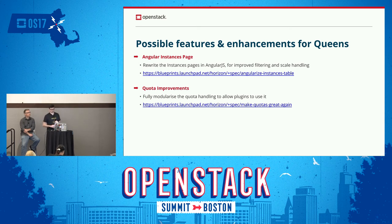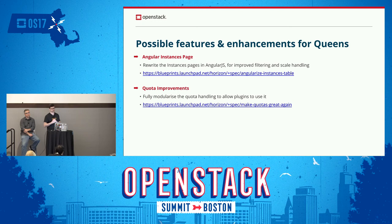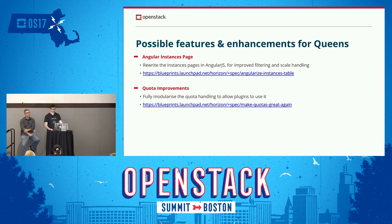The instances work is one of the key items. Instances becomes quite a difficult panel to deal with because it's one of the highest-volume pieces of content Horizon will ever talk to — it's pretty common to have thousands or tens of thousands of items. This is much different from something like your Glance images list, which will probably never reach more than a few hundred items. We want to port that fully over to Angular to improve filtering and pagination support. There was a big work-in-progress patch, but the contributor overseeing it has left the project, so we need to pick that up again.